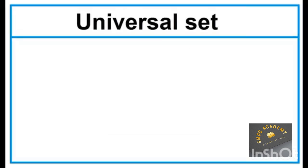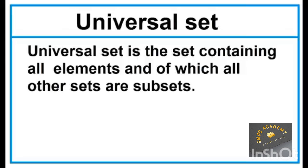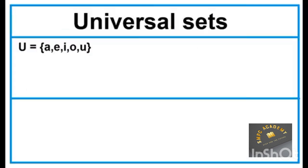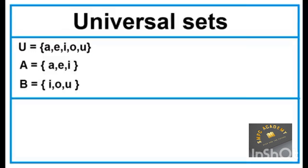Universal Set is the set containing all elements, and all other sets are subsets of it. The universal set is represented by a capital letter U. Example — let U be the universal set of all vowels in the English alphabet. Set A and Set B are proper subsets of Set U, and all their elements are found in the universal set.